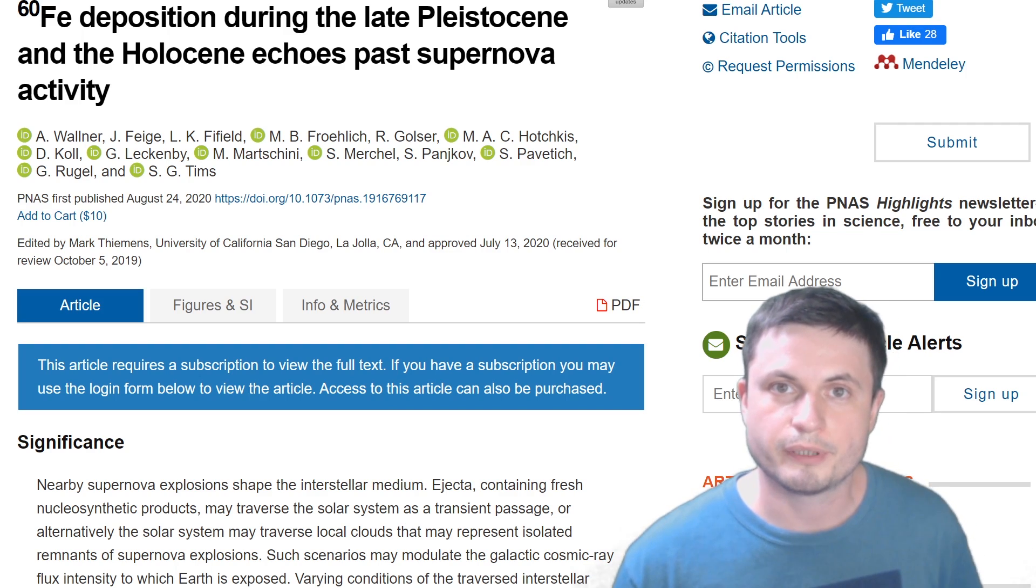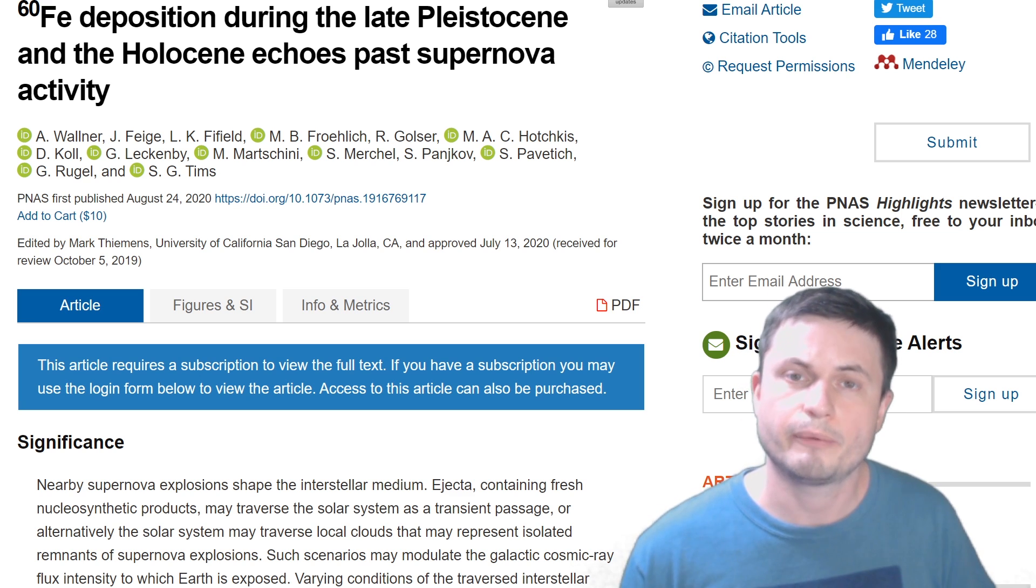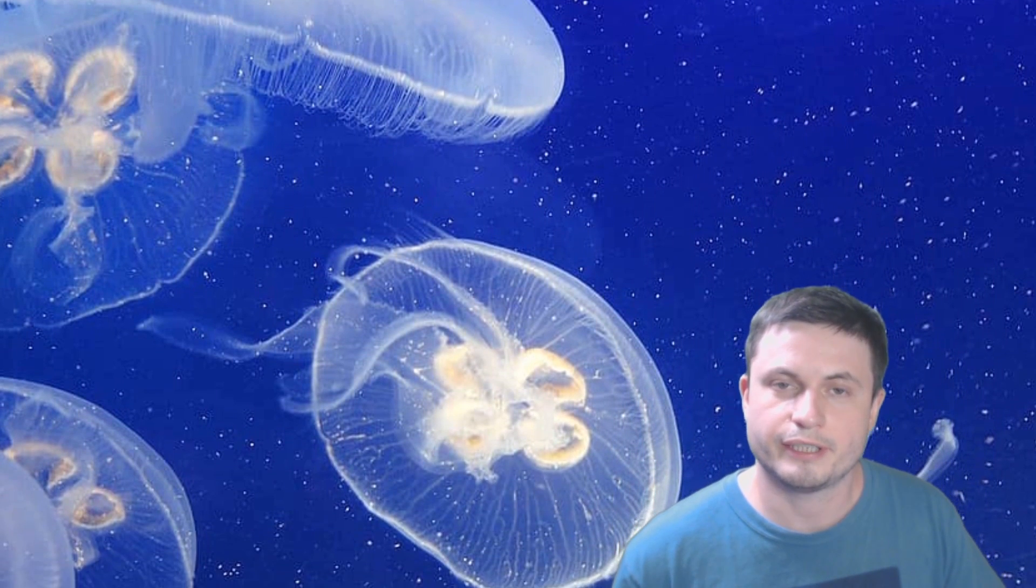And the most recent paper was able to discover Iron 60 inside of 33,000 year old deposits that were collected from deep sea sediments, which of course also suggests that the planet even back then was already bombarded by Iron 60. And all of these recent papers indicate that for the past 33,000 years at least we've been traveling through this unusual region where a very large and a very powerful supernova occurred.